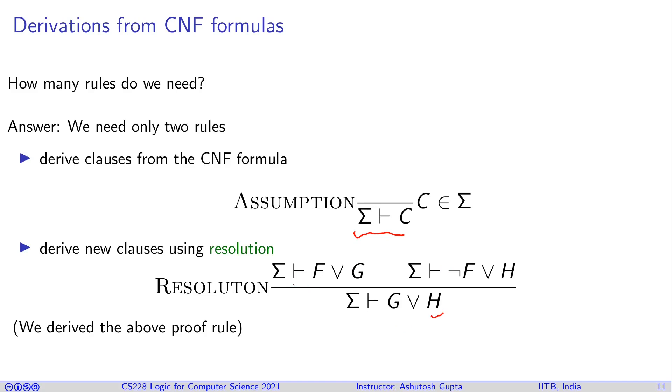So sigma proves f or g, and sigma proves not f or h, then you can derive g or h. So this is resolution. And you don't need anything else. These two are sufficient to reason about all formulas in CNF.